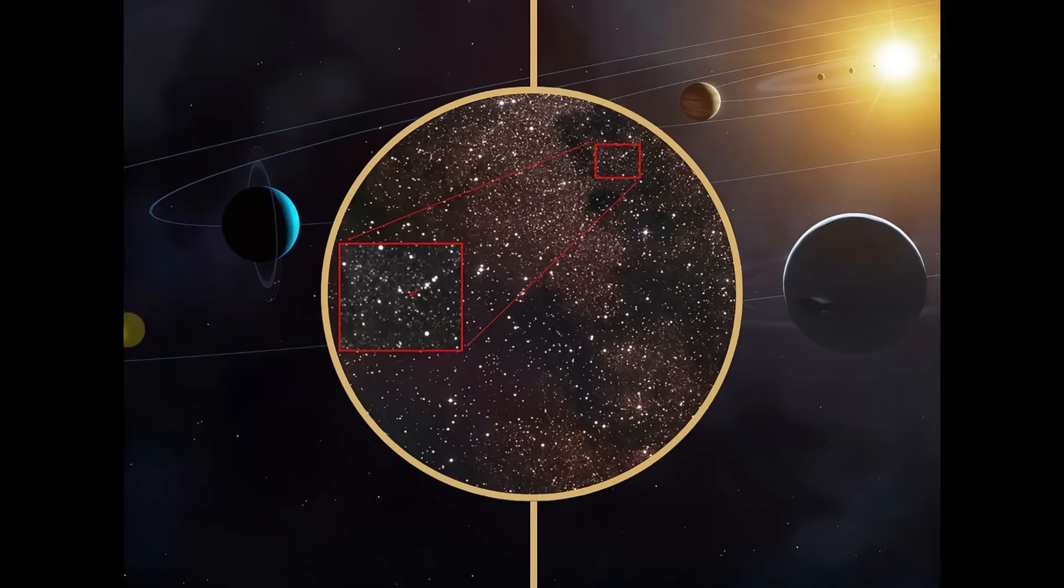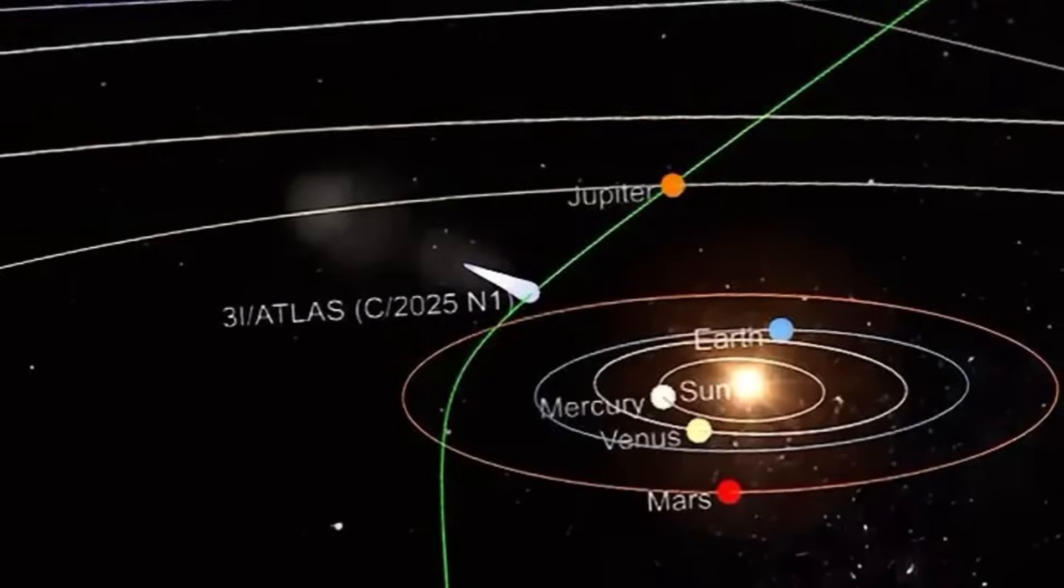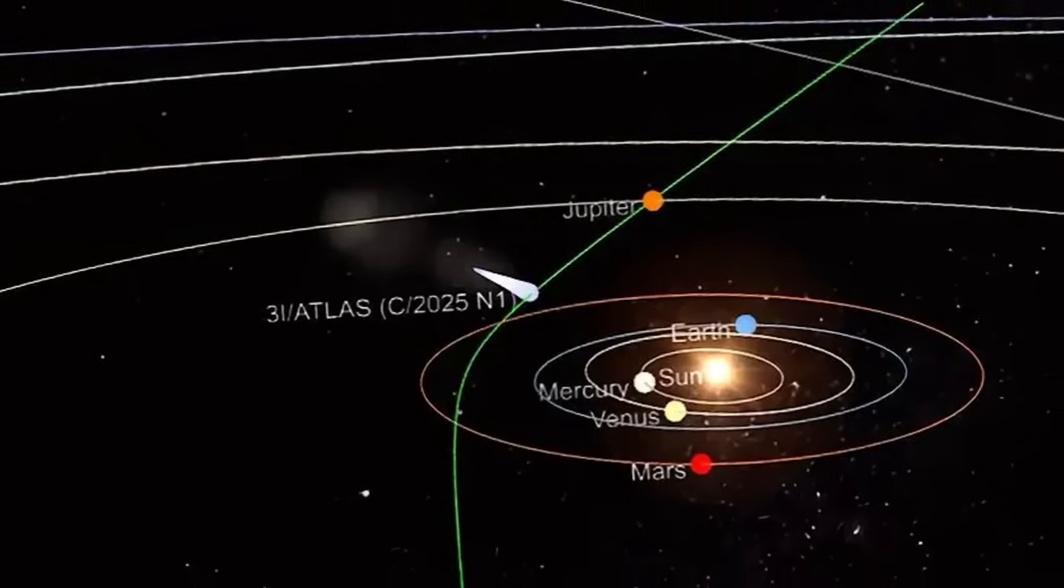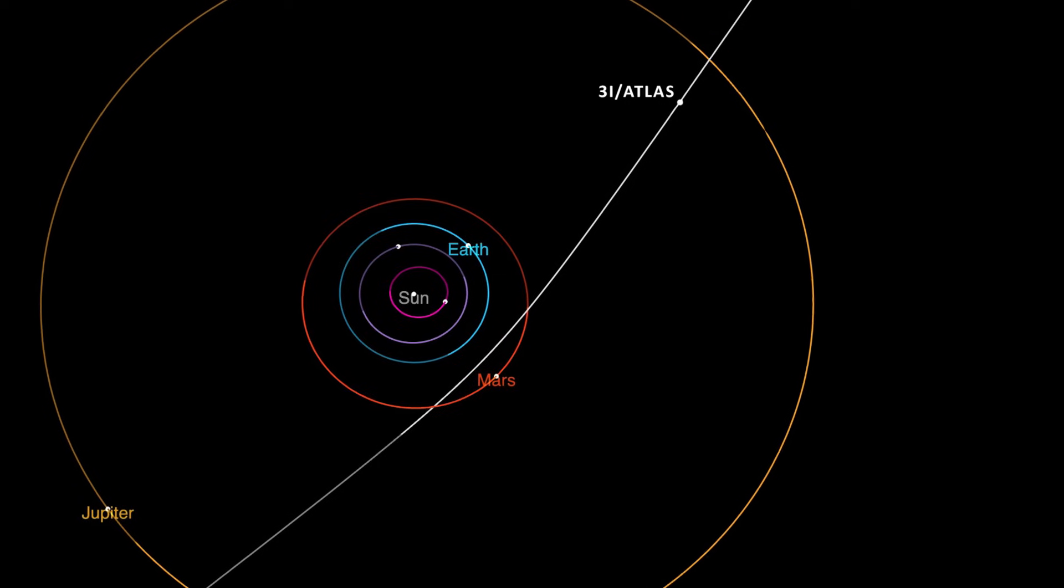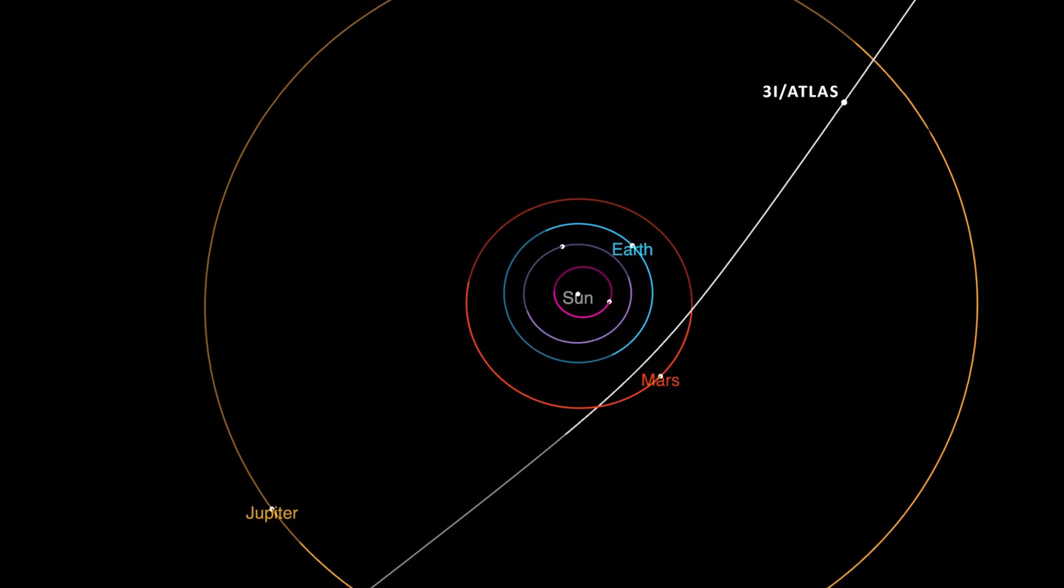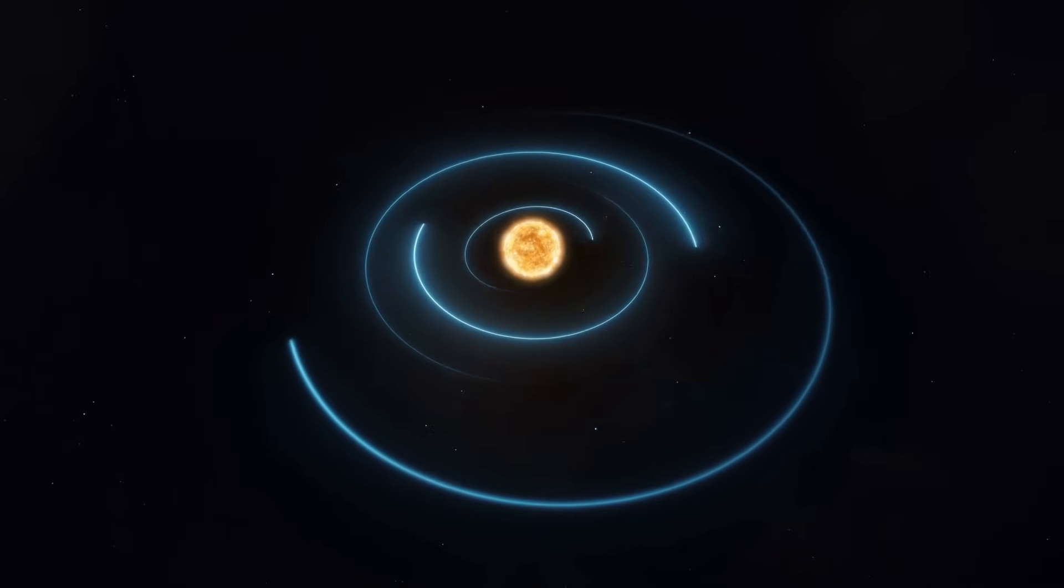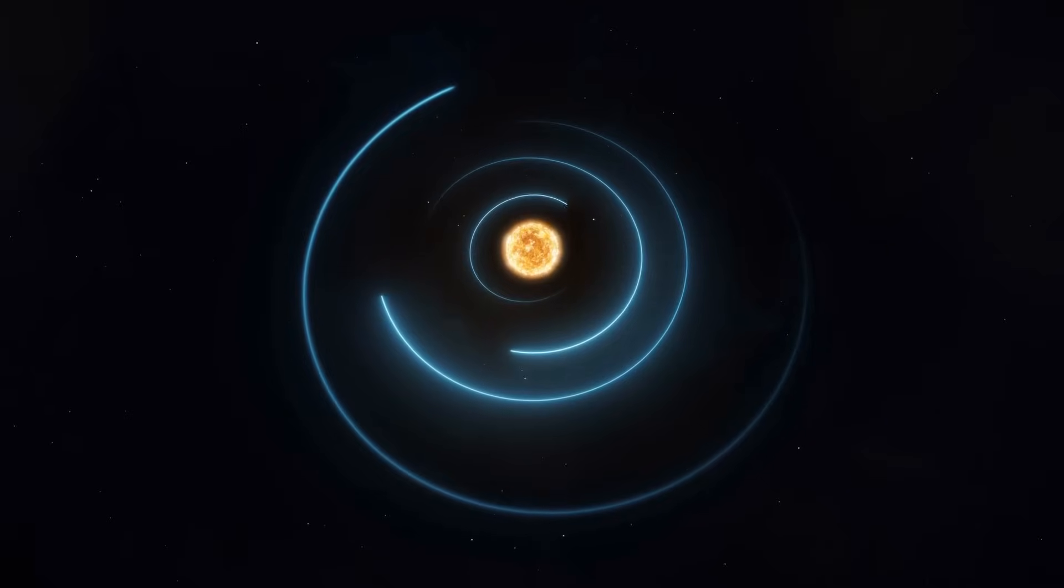3i Atlas doesn't just align with the planetary disk. It also moves in the opposite direction. Every planet, asteroid, and nearly every comet bound to the sun travels one way around our star. 3i Atlas, however, barrels through against the flow. It is retrograde, defying the prevailing current that has endured for billions of years. This combination, tight alignment with the planetary plane coupled with retrograde motion, creates a picture that feels less like chance and more like intention.